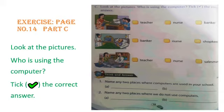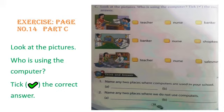Our next question is think and answer. Name any two places where computers are used in your school. Computers are used in libraries and in computer labs. Next question: name any two places where we do not use computers. You can write kitchen, swimming pool, zoo, or parks.